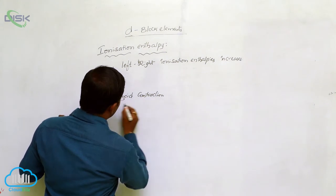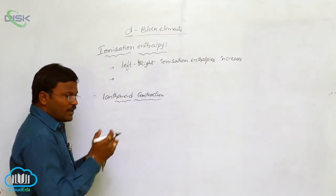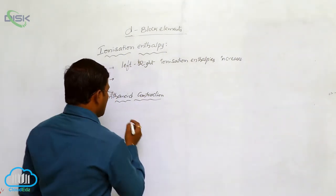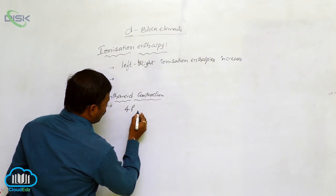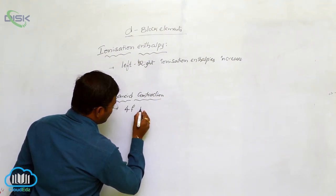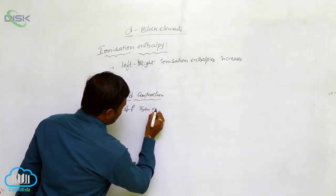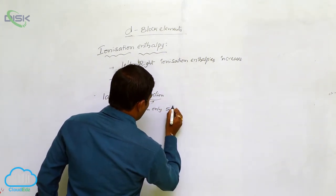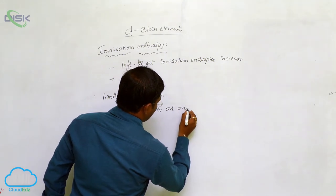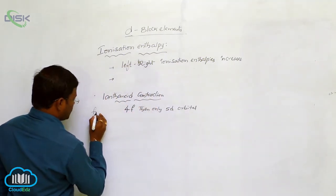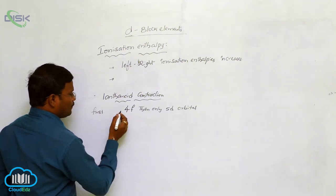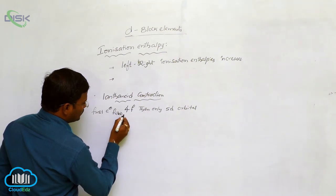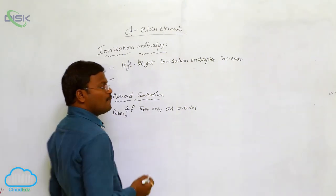What does lanthanide contraction mean? While filling electrons in the respective D-block elements, electrons are first filled in the 4f orbital, and then only in the 5d orbital. So electrons first occupy the 4f orbital.